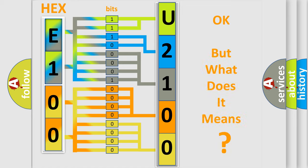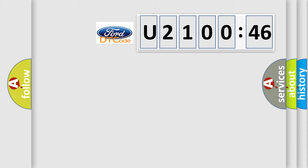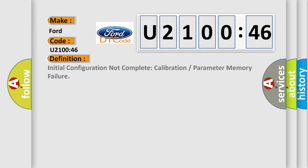The number itself does not make sense to us if we cannot assign information about what it actually expresses. So, what does the diagnostic trouble code U210046 interpret specifically for Infiniti car manufacturers? The basic definition is: Initial configuration not complete — calibration or parameter memory failure.